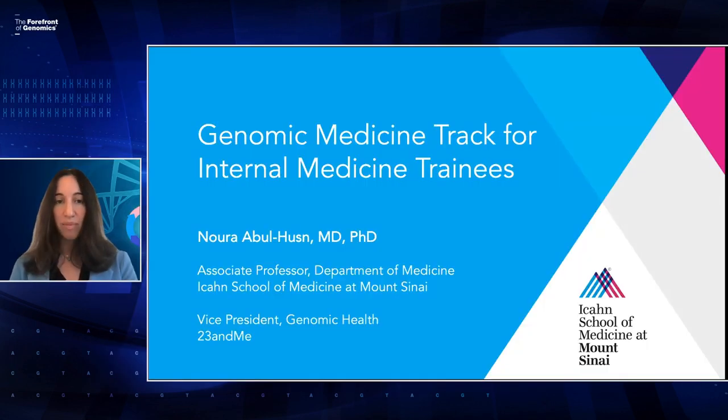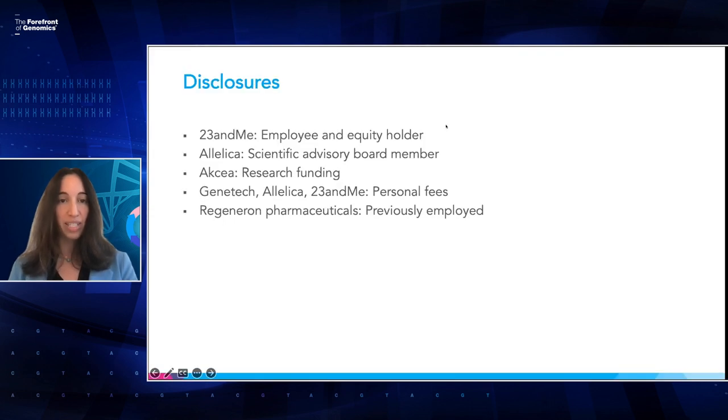I'll introduce our first speaker, Dr. Nora Abul-Husin from 23andMe, an associate professor of medicine and genetics at the Icahn School of Medicine at Mount Sinai, who will give a talk on a genomic medicine track for internal medicine trainees. Her background is as an internist and medical geneticist. To start, there were only four certified clinical geneticists per one million individuals in the U.S. as of 2019, with 40% located in just five states and 14 states having five or fewer certified clinical geneticists.